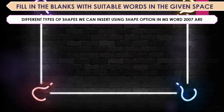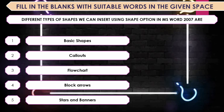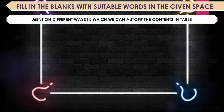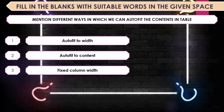Mention the different types of shapes we can insert using the Shape option in MS Word 2007. The shape types are: Basic Shapes, Callout, Flowchart, Block Arrows, Stars and Banners. Mention the different ways to auto-fit contents in a table: Auto Fit to Width, Auto Fit to Content, and Fixed Column Width.